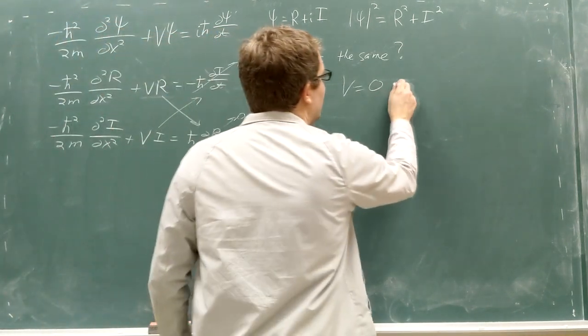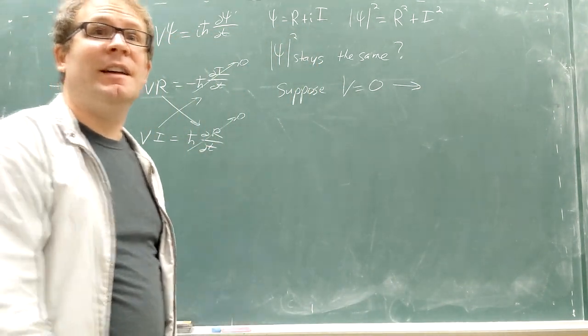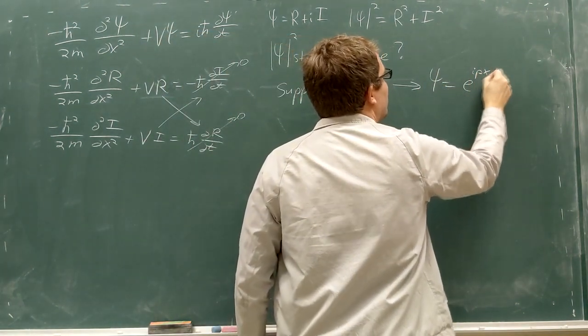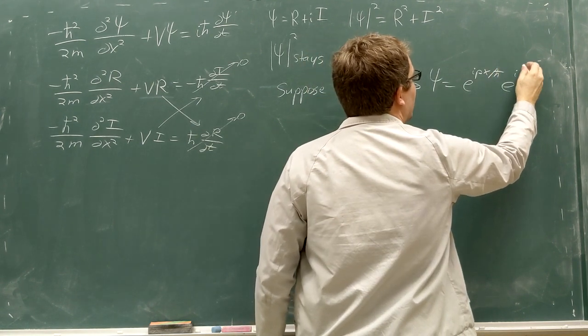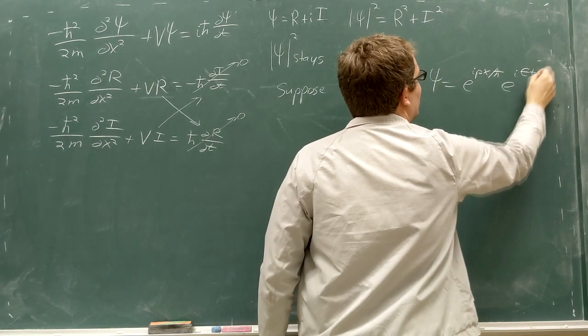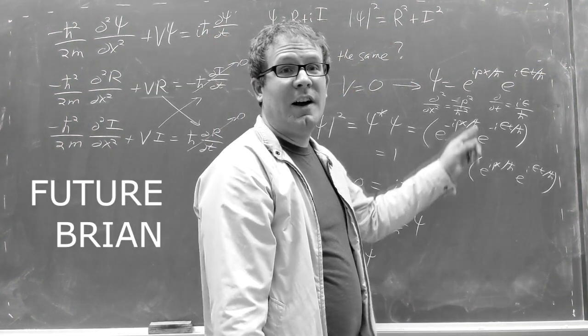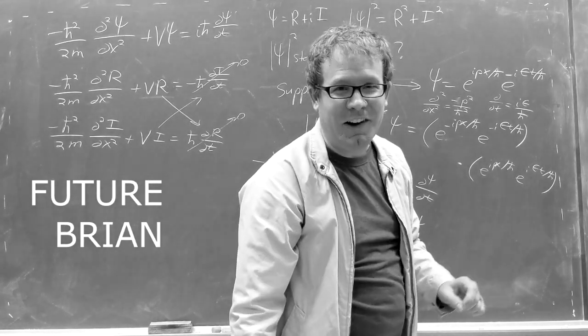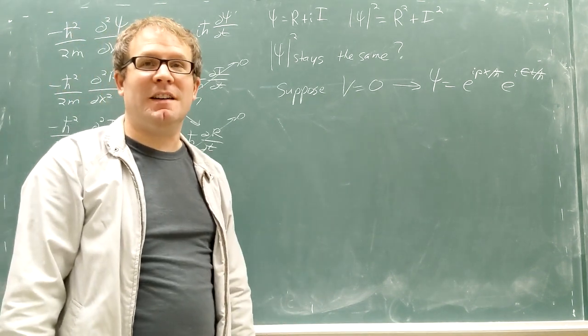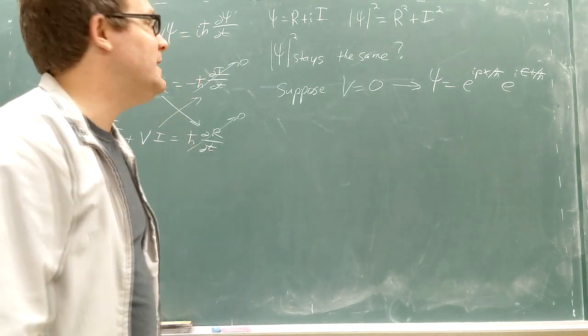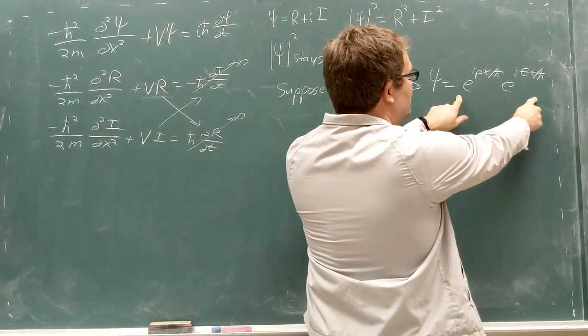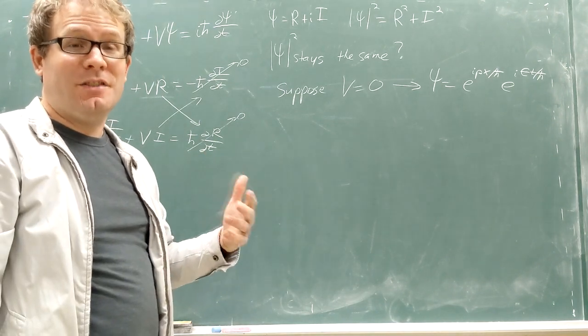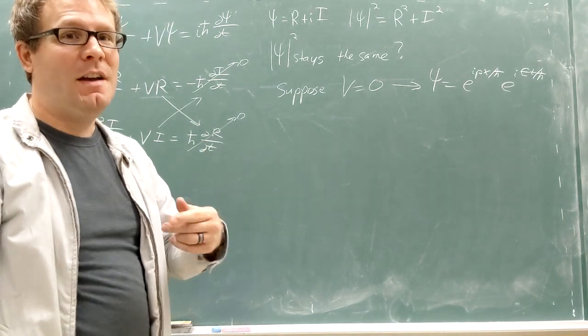It turns out if you do that you can get psi to stay still if you make psi equal to e to the i px over h-bar times e to the i energy time over h-bar. Future Brian here, I should have placed a negative sign on this e to the i et over h-bar. I'll figure it out in a couple minutes. And now there's got to be a very specific value for the energy there, but we'll get to that in a second. But if you set up this complex exponential, if you set up these two complex exponentials, you can get psi to stay, you can get psi squared to stay the same. Let me show you what I mean.